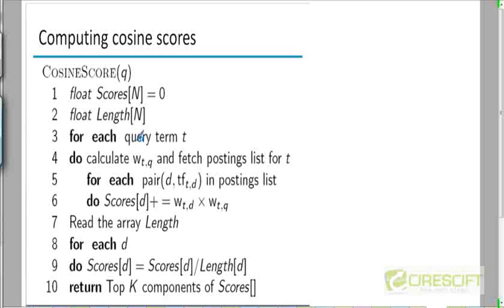This pseudocode tells you how to do that. Your documents are sorted in increasing order of doc IDs, and what that means is if you retrieve the postings list for a particular term, you are going to get the postings in increasing order of doc IDs. Because that ordering is preserved, you exactly know what the TF-IDF weights are for that particular term in all of the documents in that postings list.